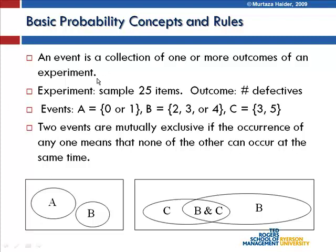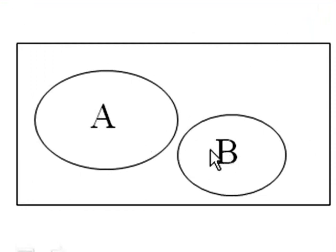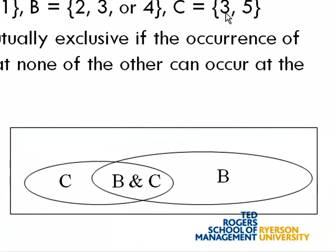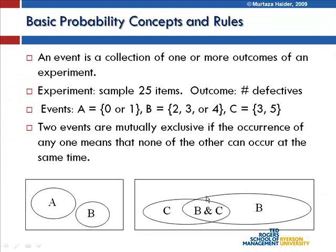Say we have an experiment where we looked at a sample of 25 items, and the outcome was a certain number of defectives. Define event A as zero or one, B as two, three, or four, and C as three or five. Two events are mutually exclusive if the occurrence of one means that none of the others can occur at the same time. Events A and B are mutually exclusive, but B and C are not, because the number three is common to both.